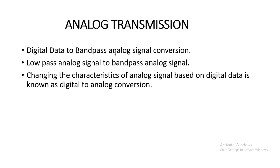When we convert a digital data to a bandpass analog signal, we normally map the digital data with any of the signal characteristics like amplitude, phase, or frequency, so that it can be transmitted through your bandpass analog channel. This kind of mapping is also done in the case of low-pass analog signal to bandpass analog signal conversion, where the low-pass analog signal information is converted into bandpass analog signal and transmitted through a communication channel.